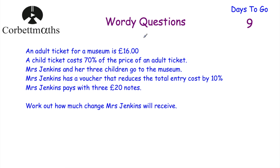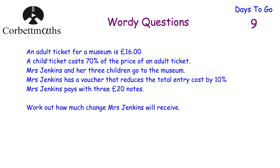I've read through the question again. Mrs Jenkins and her three children are going to the museum. The child tickets are cheaper, so we need to work out the cost of a child ticket. Mrs Jenkins has a voucher saving 10%, then she pays with three £20 notes. We've been asked how much change she receives — not 'has she got enough money', not the total amount, but the change she'll receive. Let's find the price of a child ticket: 70% of £16.